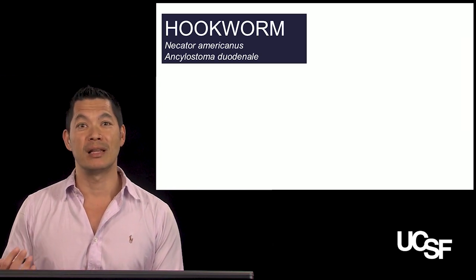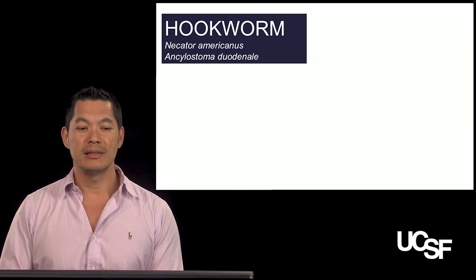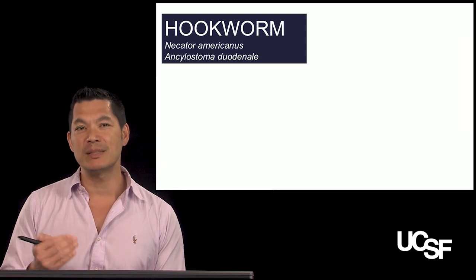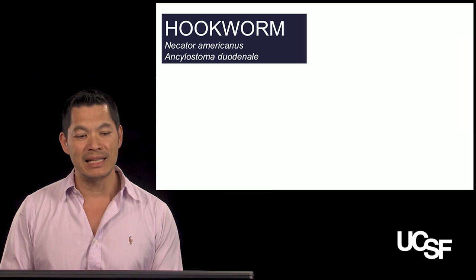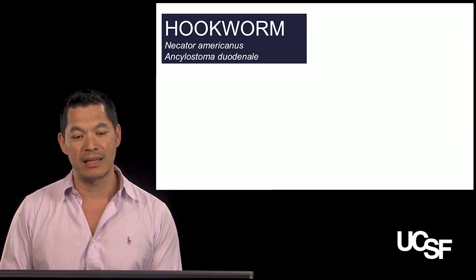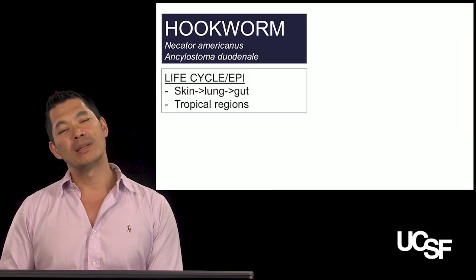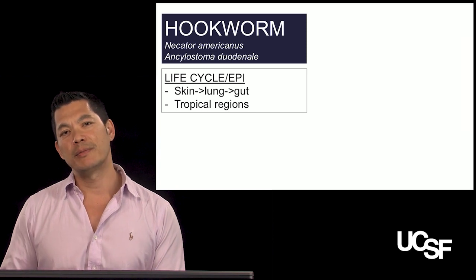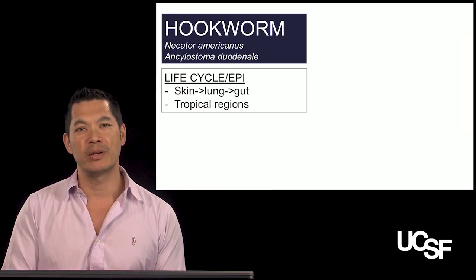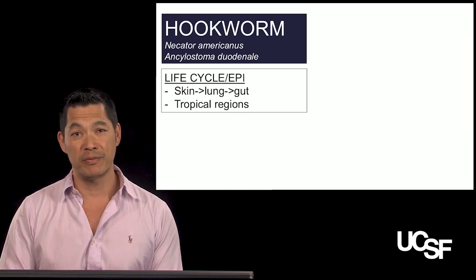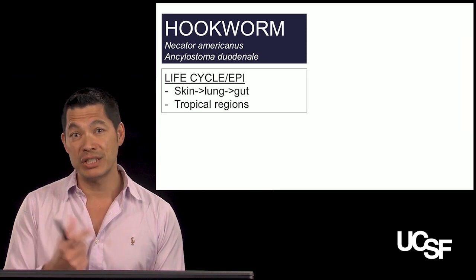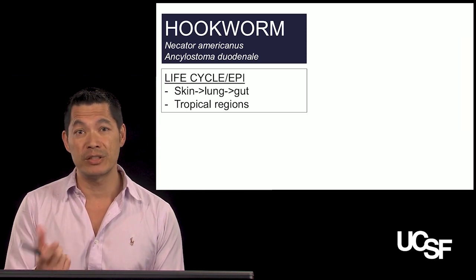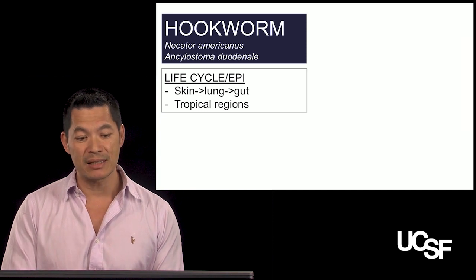This causes you to lose a lot of blood in the process. There are two main species that affect humans: Necator americanus and Ancylostoma duodenale. You can be infected not by contaminated food and drink in this case, but through the skin.